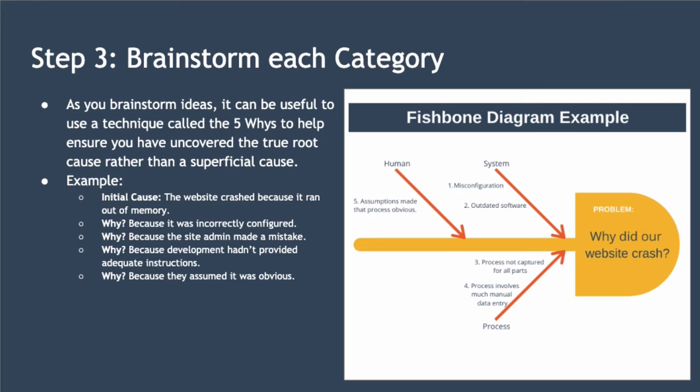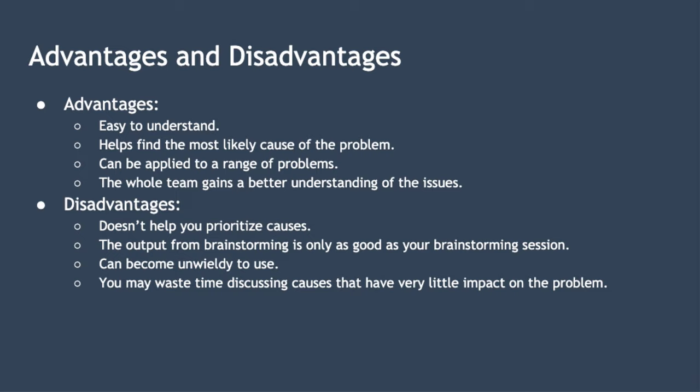There are a number of advantages and disadvantages associated with fishbone diagrams. In terms of advantages, they are easy to understand and show clearly the relationship between cause and effect. They help find the most likely cause of the problem. They can be applied to a range of problems and the whole team gains a better understanding of the issues. In terms of disadvantages, the diagram doesn't help you prioritize causes — you have to do that for yourself. The output of the brainstorming is only as good as your brainstorming session with your team. They can also become unwieldy for very complex issues where you may have hundreds of potential causes, making them very difficult to represent graphically. And finally, you may waste time discussing causes that have very little impact on the problem.